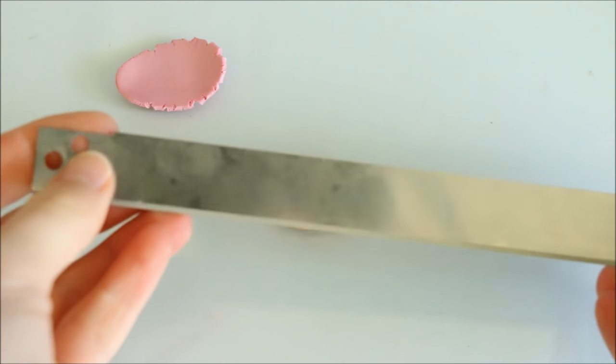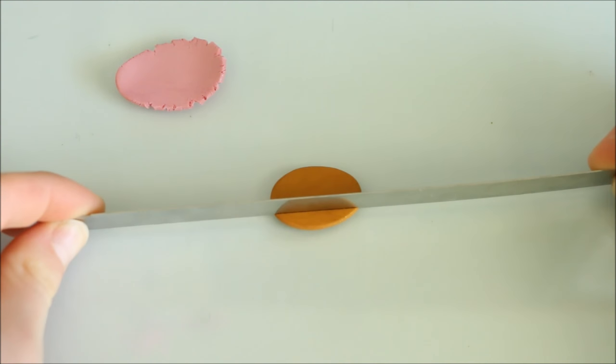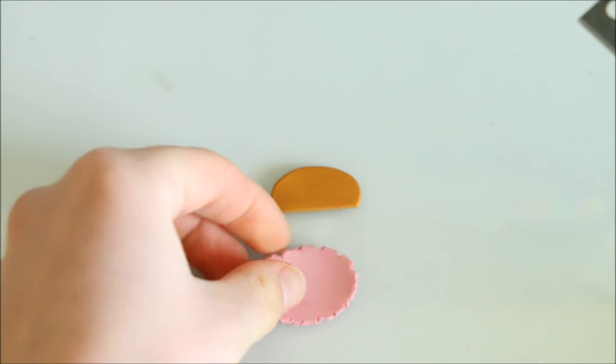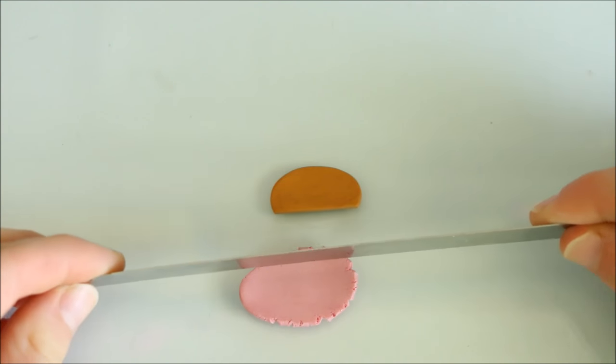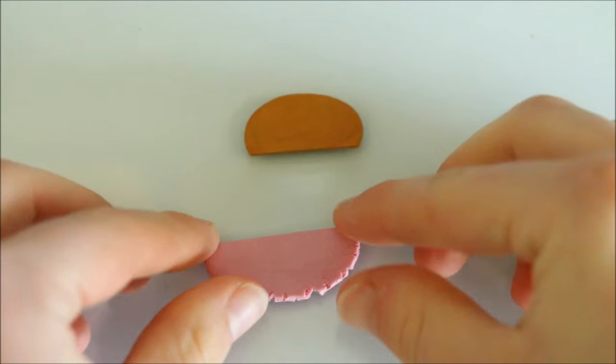I then took my longer blade and began cutting the clay to the shape I wanted it. I firstly trimmed off one side of each color so that I had a neat straight edge where I could join them together.